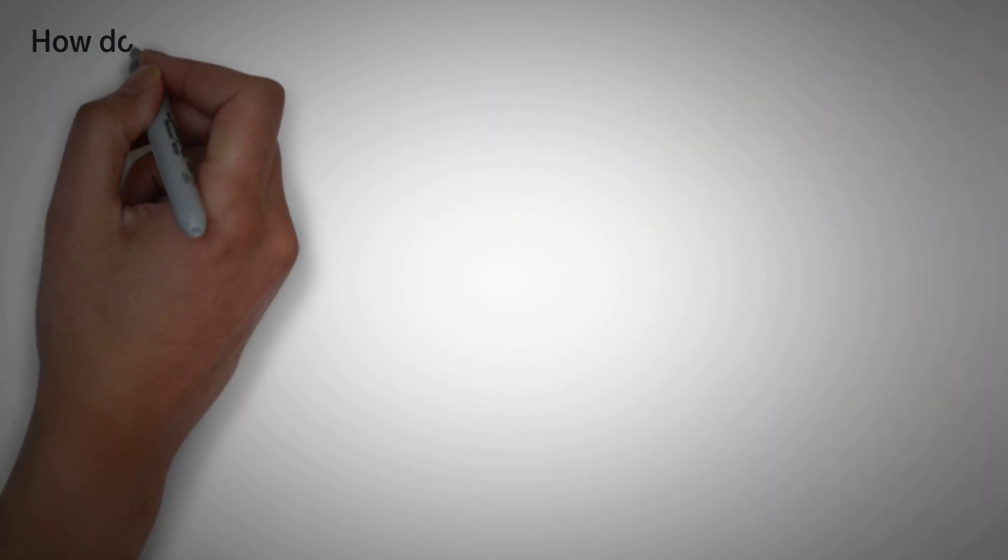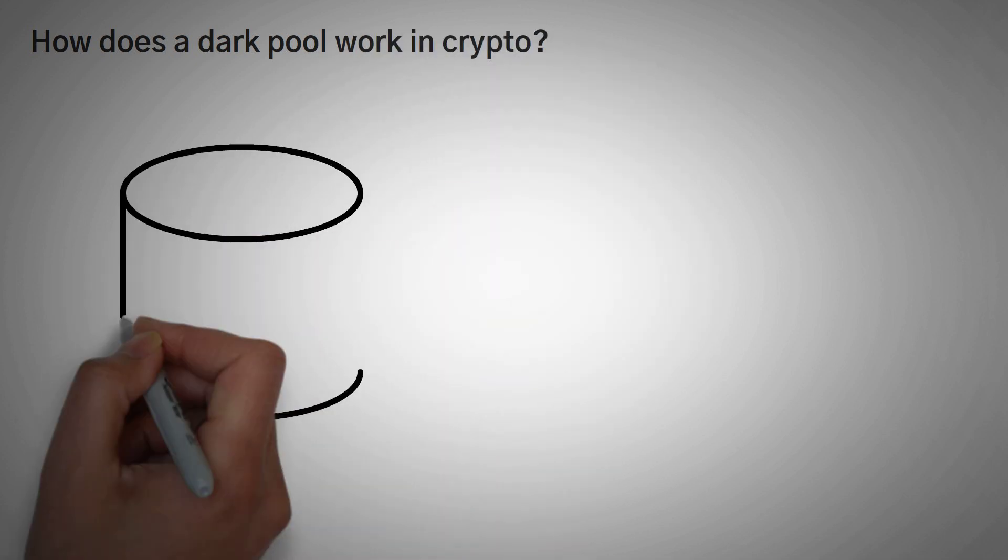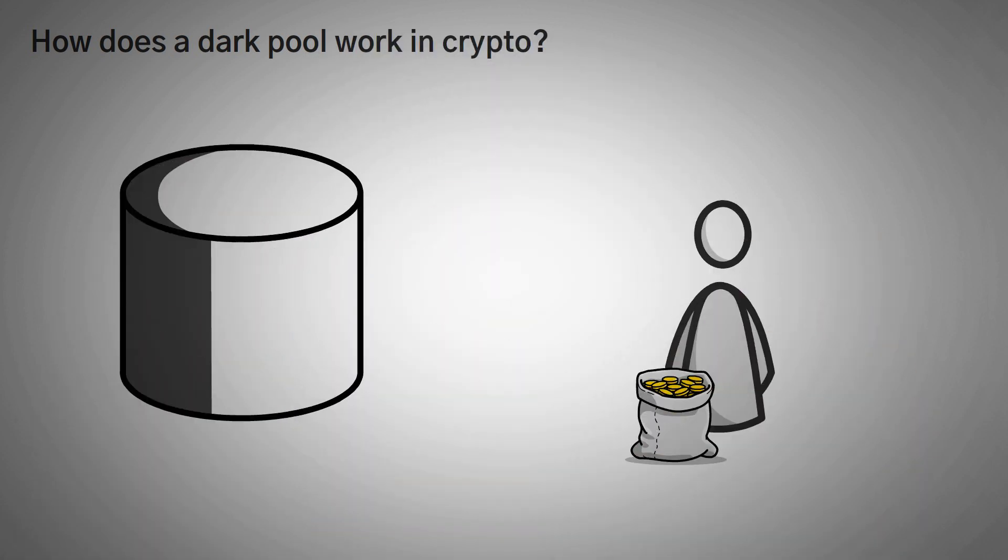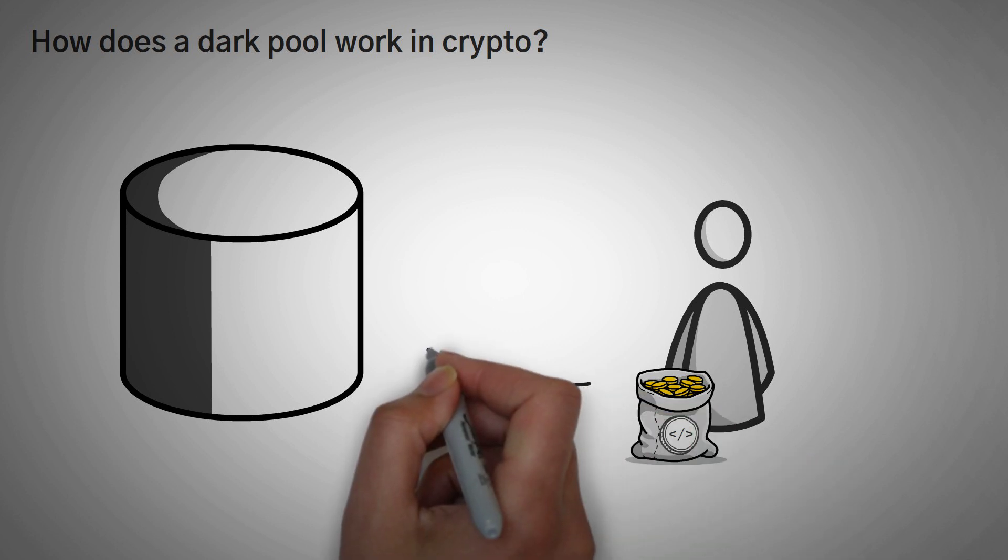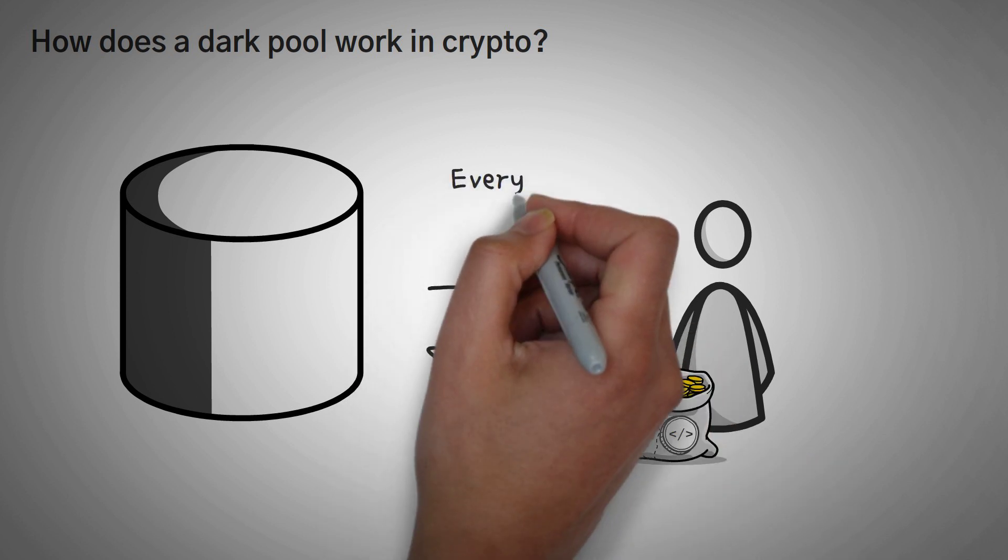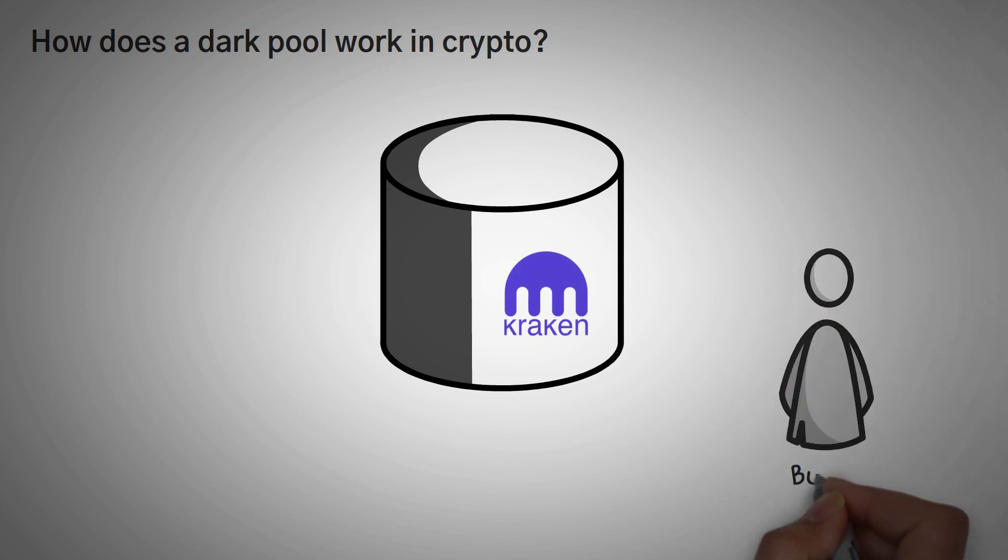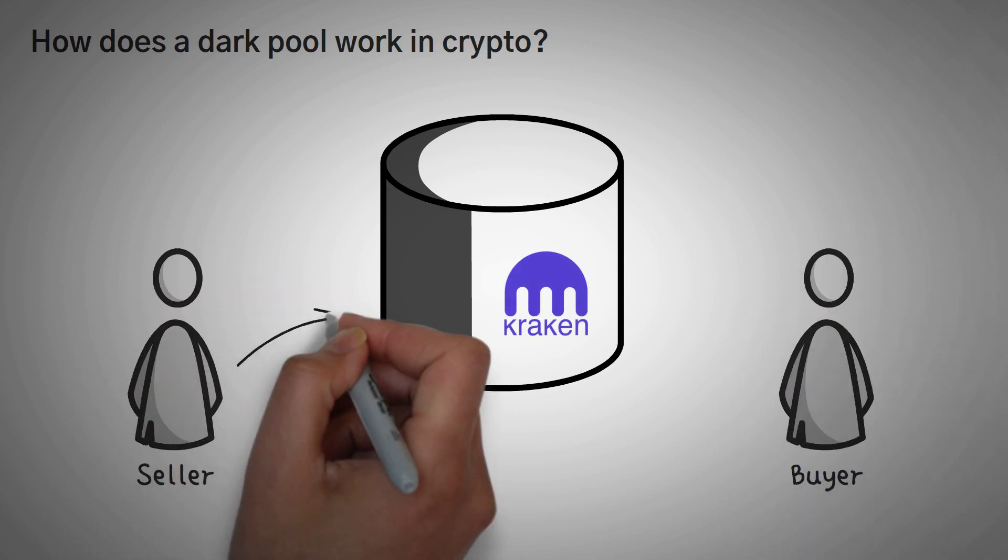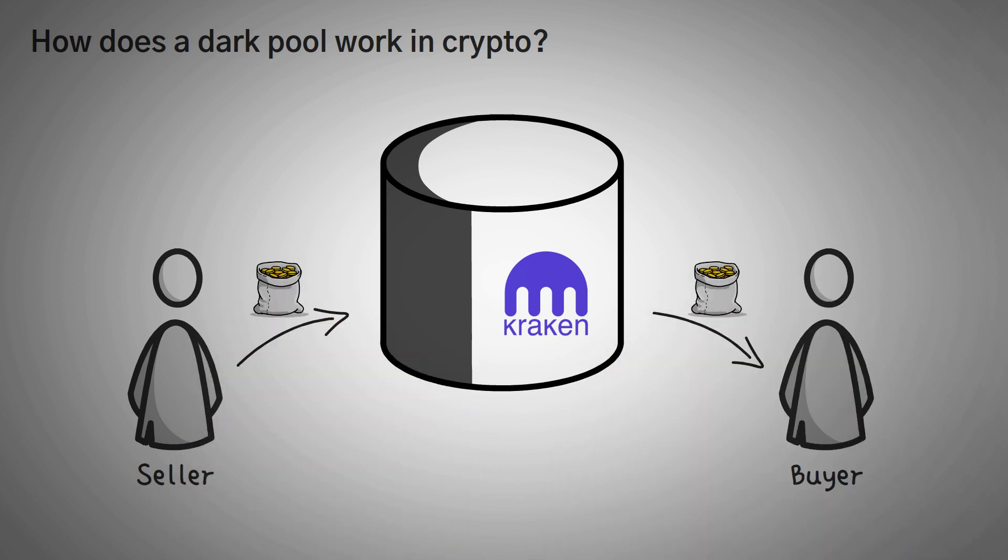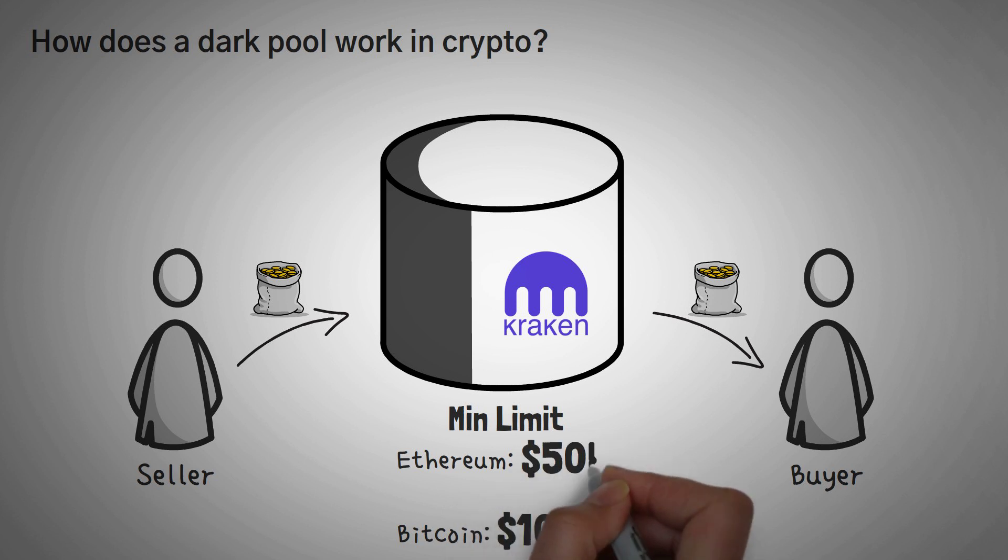So moving on, let's get into how a dark pool actually works. They work in an interesting way, and they're usually for large investment portfolios that are selling a large amount of crypto each and every day. Let's use the platform Kraken for example. Kraken actually has a specific dark pool where they have buyers and sellers committing to a certain amount of Ethereum or Bitcoin. For the Kraken dark pool, the requirements are currently $100,000 of Bitcoin or $50,000 of Ethereum.